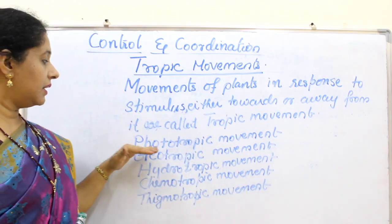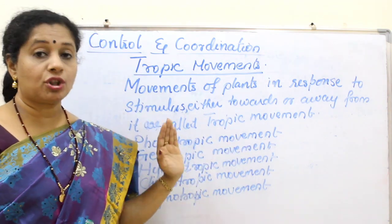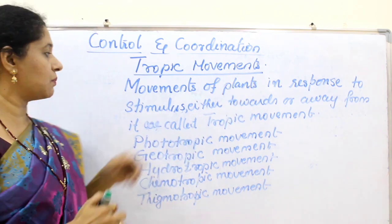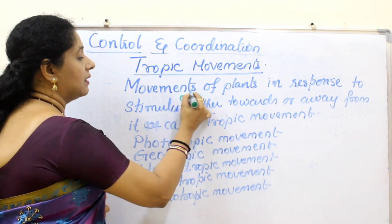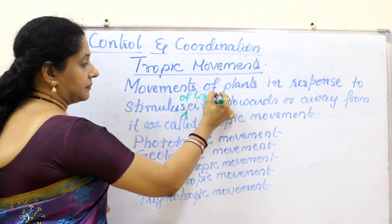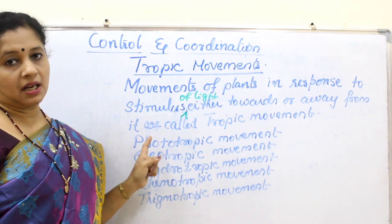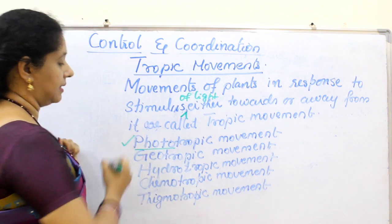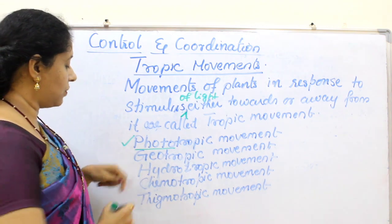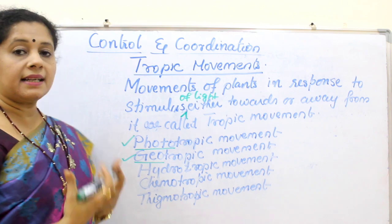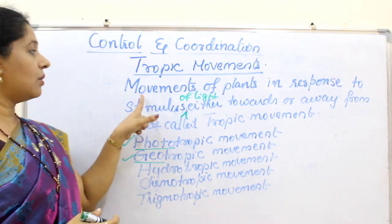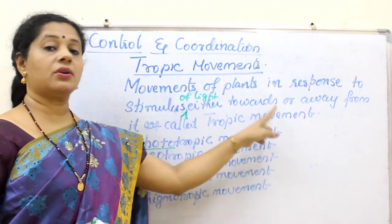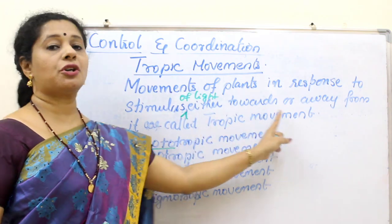First, phototropic movement. Photo means light. So: movements of plants in response to stimulus of light, either towards or away from it, are called phototropic movement. Next, geo means gravity. Movements of plants in response to stimulus of gravity, either towards or away from it, is called geotropic movement.